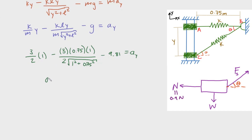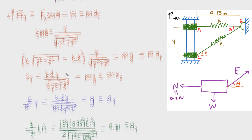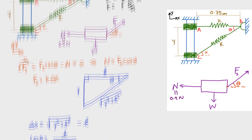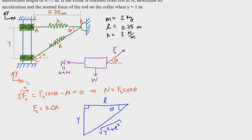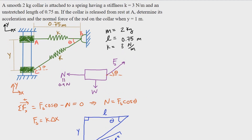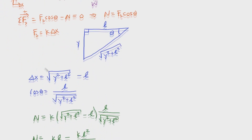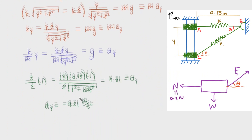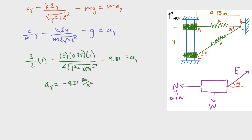Plugging in all values, we get aᵧ = −9.21 m/s². The negative sign is because we defined y as positive upward, but the collar is falling from A to C — moving in the negative y direction — so it's accelerating downward at 9.21 m/s².